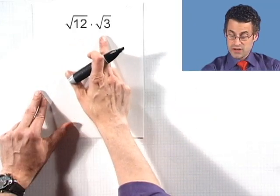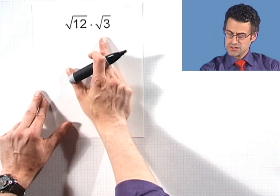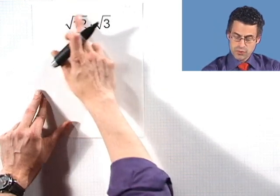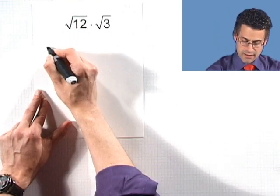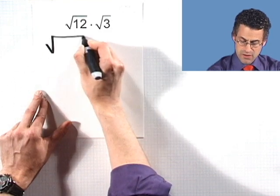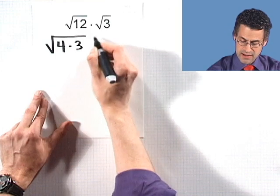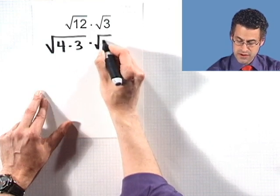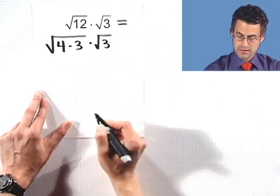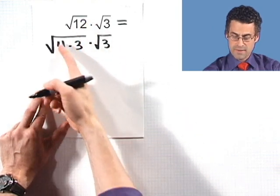Looking at the square root of 12 times the square root of 3 looks sort of complicated, but 12 I can write as what? I can write the 12 as 4 times 3. And then I've got this times square root of 3.